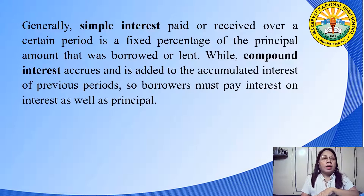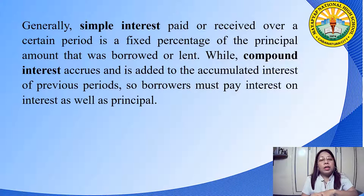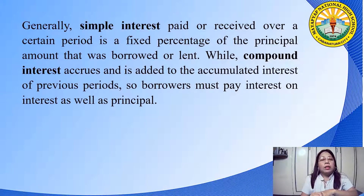Generally, simple interest paid or received over a certain period is a fixed percentage of the principal amount that was borrowed or lent, while compound interest accrues and is added to the accumulated interest of previous periods, so borrowers must pay interest on interest as well as principal. If you are a business owner, compound interest is favorable because you earn more money. But if you are a borrower, simple interest is favorable since you pay a lesser amount to return the borrowed money.